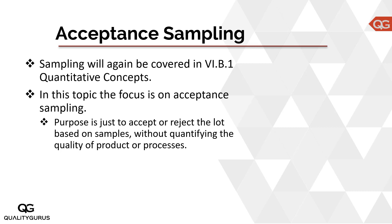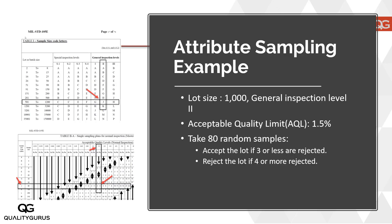Here is an example of attribute sampling, and remember that this represents the end goal of this topic on acceptance sampling — this is what you will be doing once you complete this topic. So let's look at this example without going into too much detail, because we will be discussing these details later on step by step.